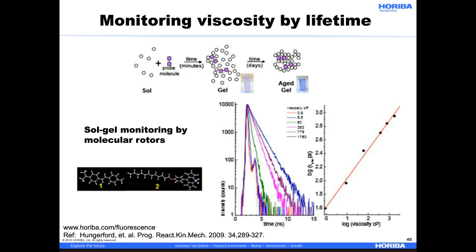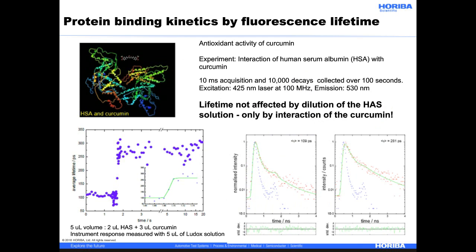Fluorescence lifetimes can also be indicators of local environment. Here's an application where a molecular rotor is used to monitor the viscosity of a sol-gel process by fluorescence lifetime. The more viscous the sol-gel, the longer the lifetime of the fluorescence probe. Because instrumental sources and electronics are becoming faster and better, we can also measure the fluorescence lifetime of a molecule in kinetics mode. Here, the binding of an antioxidant to human serum albumin (HSA) is detected using fluorescence decay over several seconds — in this measurement, 10,000 decays were measured over 100 seconds total. The nice thing about fluorescence lifetimes is that they are independent of the fluorophore concentration; the lifetime is not affected by dilution of the sample, but only by the interaction of the curcumin with the protein.